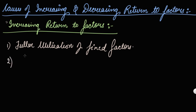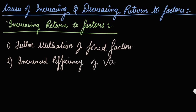The second cause is increased efficiency of variable factors. As more and more labor is combined with the fixed factor — let's say a machine — your variable factor's efficiency will also increase, thus increasing your marginal product.